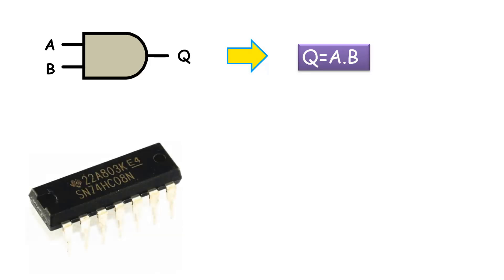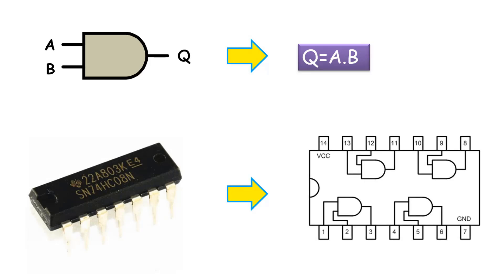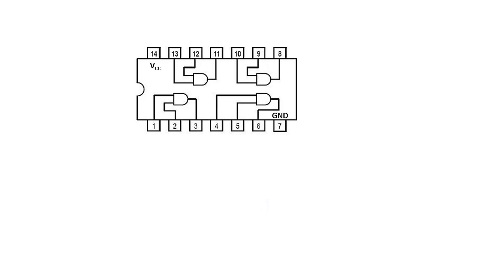The 7408 IC is the IC of this logic gate. When we look at its internal structure, we can see that this integration consists of 4 AND gates. In logic gate ICs, the 14th pin is VCC — the positive supply — and the 7th pin is GND, the ground, i.e., negative supply. To better understand the working principle, we can interpret the truth table by connecting buttons to the inputs of the IC and LEDs to its output. Let's connect the LED with a 220 ohm resistor so it is not damaged by 5 volts.